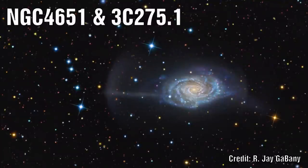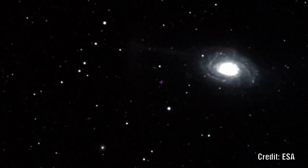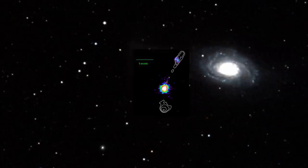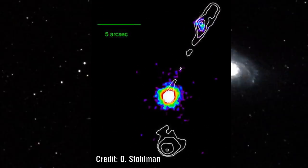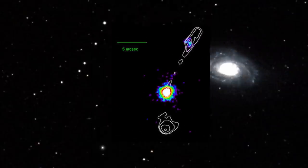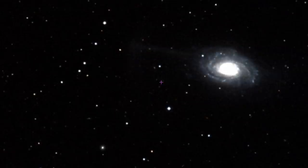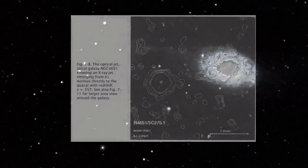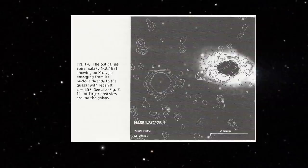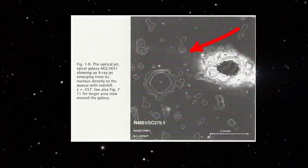NGC 4651 and 3C 275.1. Now the bright radio quasar 3C 275.1 is situated only 3.5 arc minutes from the bright apparent magnitude spiral galaxy NGC 4651. Add into this the fact that this galaxy has jets emerging from it. On initial inspection you would say that the jets do not appear to point at the quasar, so these could not be related.